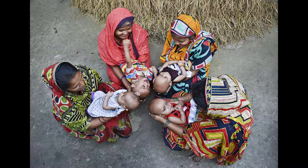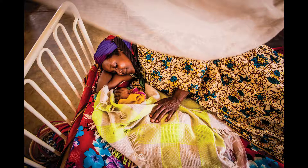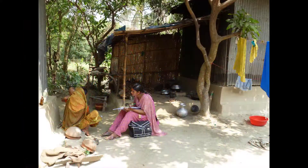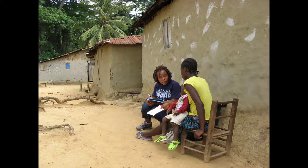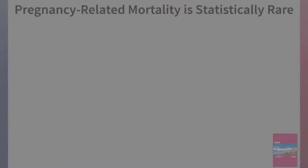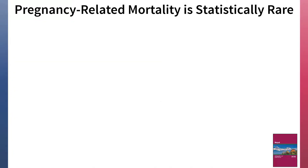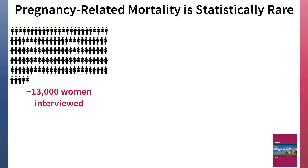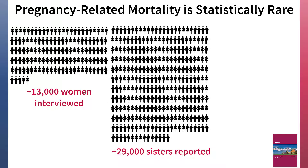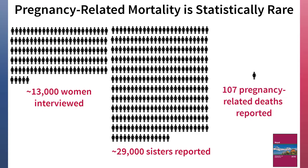One reason why the amount of uncertainty around PRMR estimates is relatively large is that pregnancy-related mortality is such a statistically rare event. This means that many women need to be interviewed in order to identify even a small number of deaths and produce reliable PRMR estimates. For example, during the 2016 Nepal DHS, nearly 13,000 women were interviewed who reported about 29,000 sisters, yet only 107 pregnancy-related deaths to sisters were reported. DHS surveys only present estimates of PRMR at the national level because too many women would need to be interviewed to allow disaggregation by background characteristics.